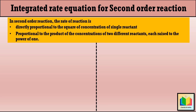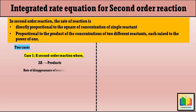Second order reactions often occur in bimolecular reactions where two molecules collide to react. There are two cases where the reaction order is two. Case 1 is a second order reaction where two molecules of a reactant react to produce a product. Here, two molecules of the same reactant are involved, so we write the rate of disappearance of reactant A as: -rA = kCA². This means the rate is proportional to the square of its concentration.